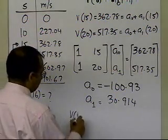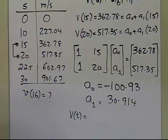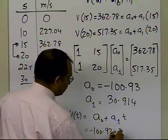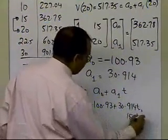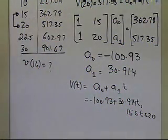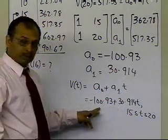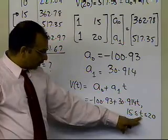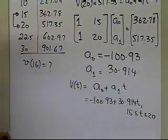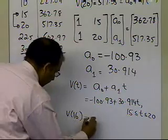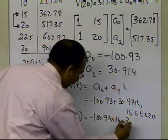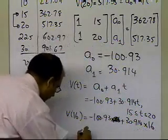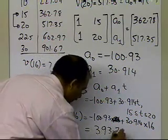So the linear interpolant for velocity is v(t) = a0 + a1*t = −100.93 + 30.914*t, and this interpolant is valid between t = 15 and t = 20. It is very important to state not just the interpolant itself, but also the domain in which it is valid — otherwise putting values outside this range would be extrapolation, not interpolation. The value of the velocity at t = 16 is −100.93 + 30.914 × 16, which turns out to be approximately 393.7 meters per second.